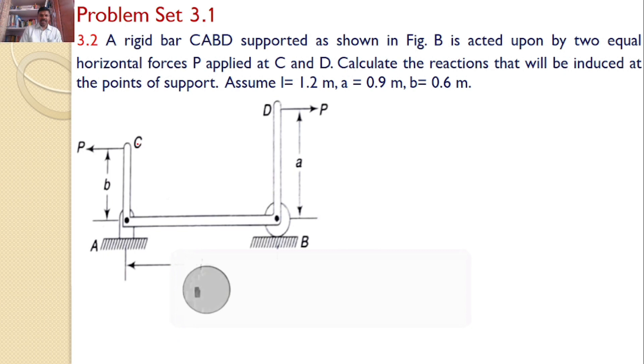That means there is a bar CABD acted upon by two equal and opposite forces P and P. Our interest is to find the reactions at A and B. Clearly, we can see A is a hinged support, so two reactions will develop here: horizontal reaction and vertical reaction.